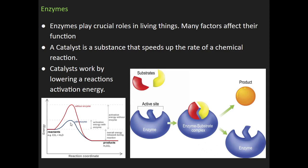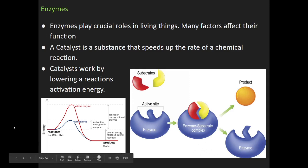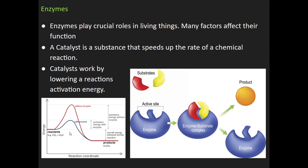Enzymes are crucial in making these chemical reactions happen. Notice in this picture there are two lines — a red line and a blue line. The red line is how much energy it would take for the reaction to occur without an enzyme; the blue line is how much energy it takes with the enzyme. The enzyme makes it happen easier and faster. Without these enzymes, we wouldn't be able to have life on earth. A catalyst is a type of enzyme — enzymes are proteins — that speeds up the rate of a chemical reaction.